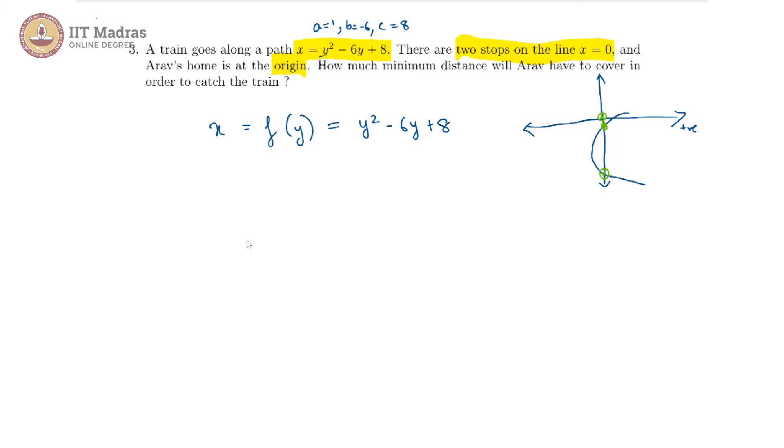The question is simple: you have two roots for your x is equal to f of y and these roots will be on the y-axis now because we have switched the axis, and which root is closer to Arav's home, that is which root is closer to the origin.